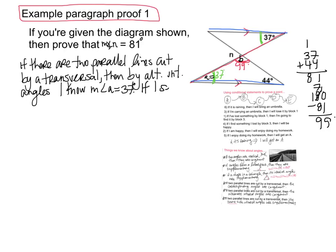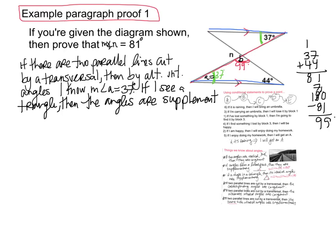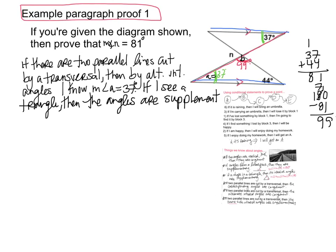If I see a triangle, then the angles are supplementary — so the measure of angle B must equal 99 degrees. Let's follow my thoughts: I saw the parallel lines, used the alternate interior angles, then saw there was a triangle whose angles must add up to 180. I did my math on the side but only write my results here. Now I'm on my way to getting to angle N.